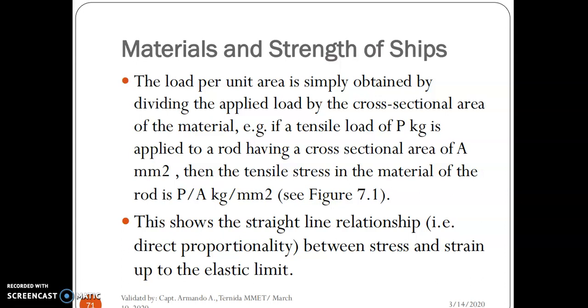The load per unit area is simply obtained by dividing the applied load by the cross-sectional area of the material. For example, if a tensile load of P kilogram is applied to a rod having a cross-sectional area of A millimeter square, then the tensile stress in the material of the rod is P/A kilogram per millimeter square. See Figure 7.1.